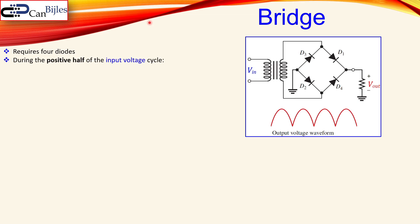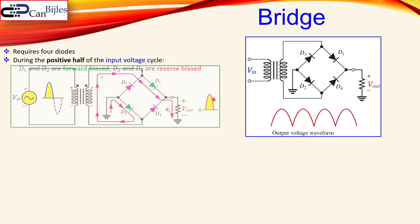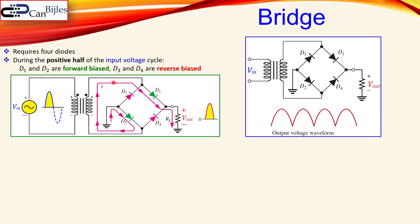During the positive half of the input cycle, D1 and D2 are conducting — they are forward biased — and D3 and D4 are reverse biased, so they are open. You can see the current flow shown in pink; the green diodes are forward biased and the other two are reverse biased. The first part of the period is replicated at the output.